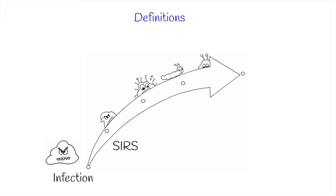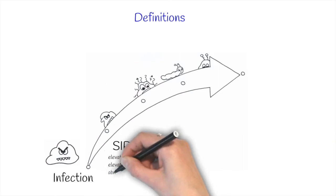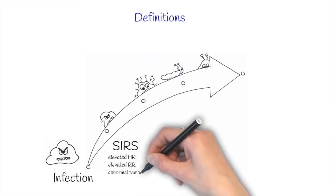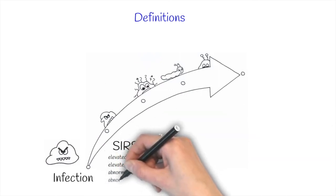The inflammatory syndrome is characterized by at least two of the following: elevated heart rate, elevated respiratory rate, abnormal temperature, and abnormal white blood cell count or presence of band or toxic neutrophils.